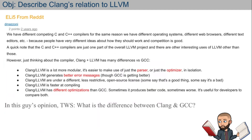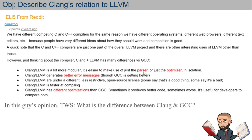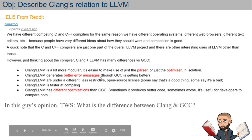To finish up, one more positive thing about Clang from Reddit — take that with a grain of salt. We have different competing C and C++ compilers for the same reason we have different operating systems and browsers: people have different ideas about how they should work and competition is good. Compilers are just one part of the overall LLVM project, and some people think Clang is a lot more modular — easier to use just the parser or just the optimizer, and known to have better error messages.